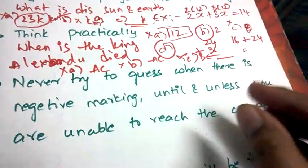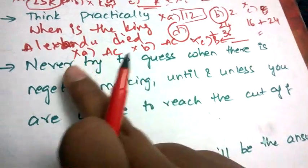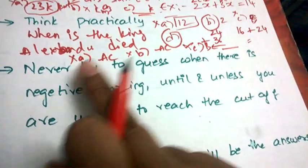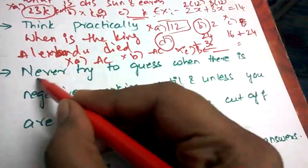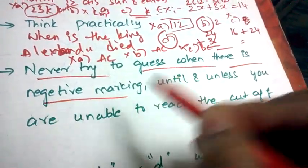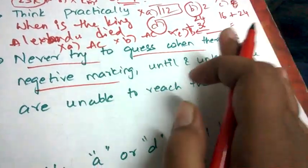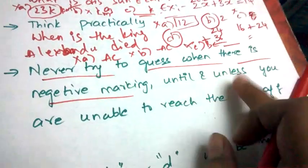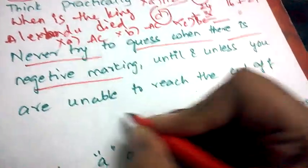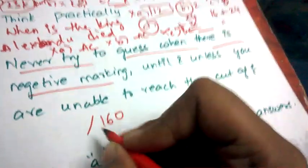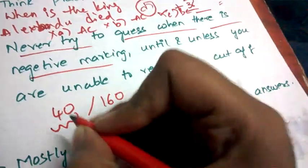Next is never try to guess when there is negative marking. This is the most important statement I wanted to tell you. When you have negative marking, please don't try to guess, keep guessing, until unless you're unable to reach the cutoff.